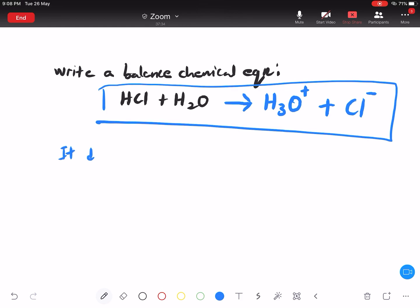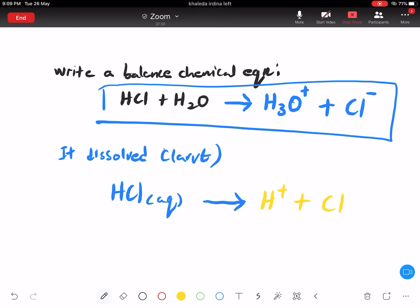It dissolve. Dia larut. Larut, eh? Larut. Kalau larut, HCl... Arrhenius cakap apa? Arrhenius cakap apa? Acid adalah satu benda yang larut dalam air membentuk... Membentuk apa? Hydrogen ion dan... Ini. Ini adalah equation dia.